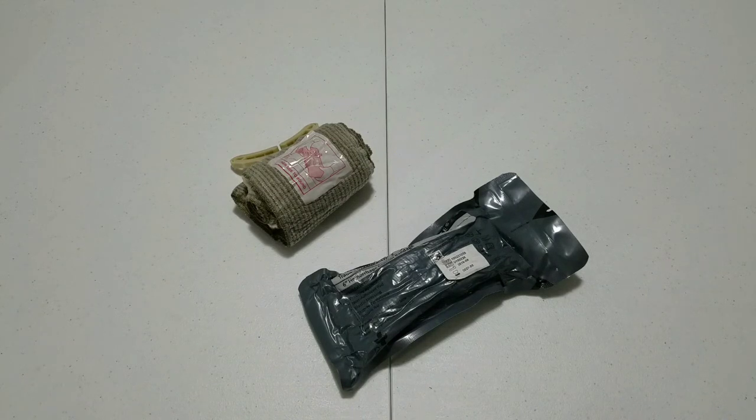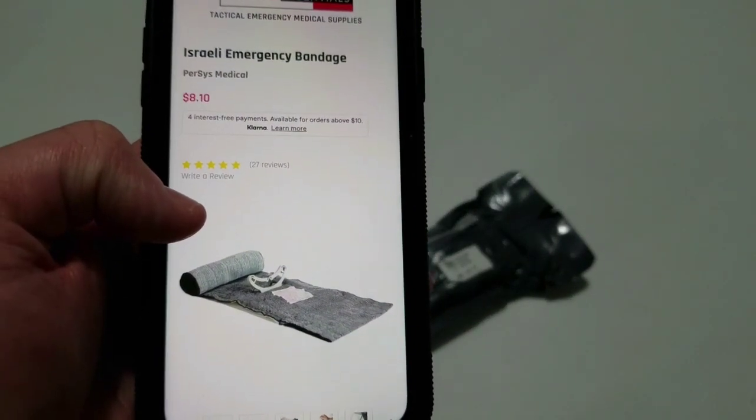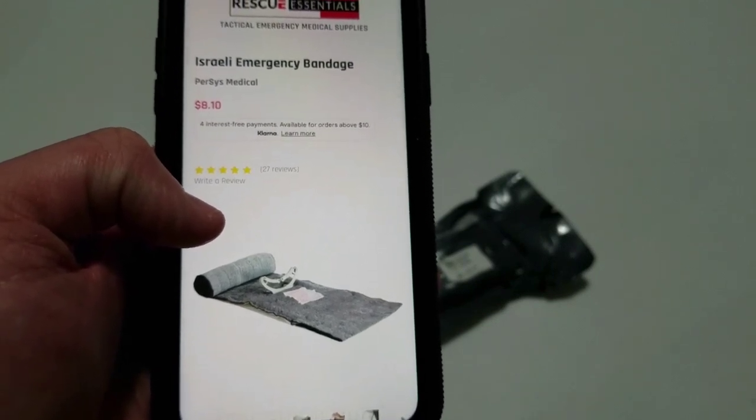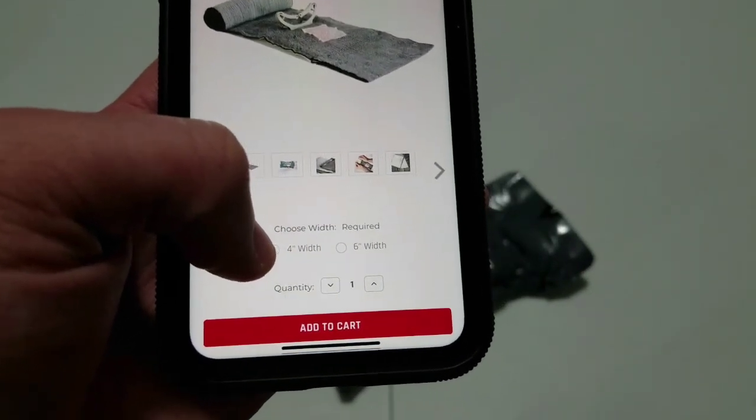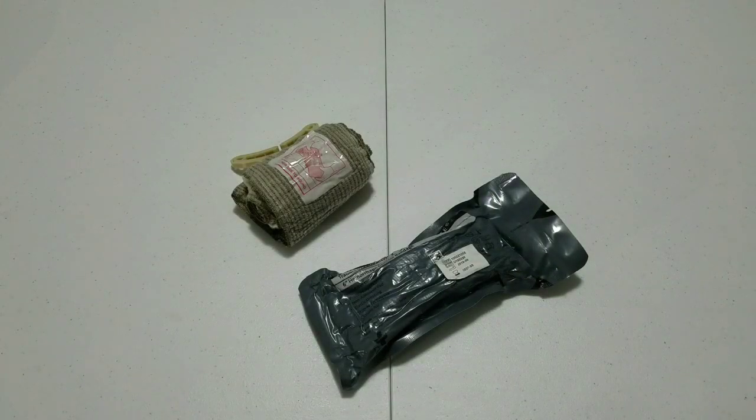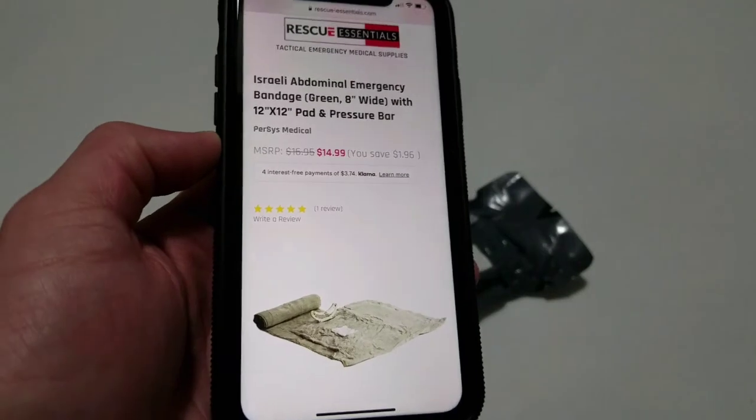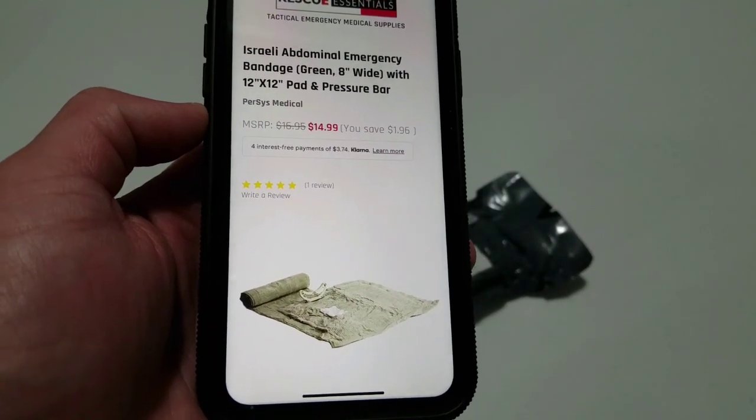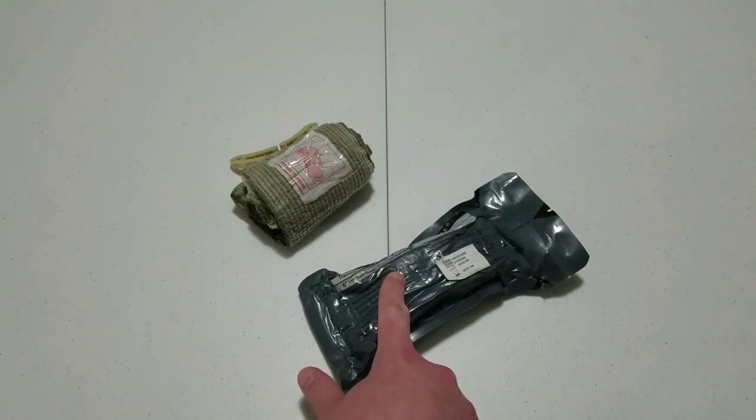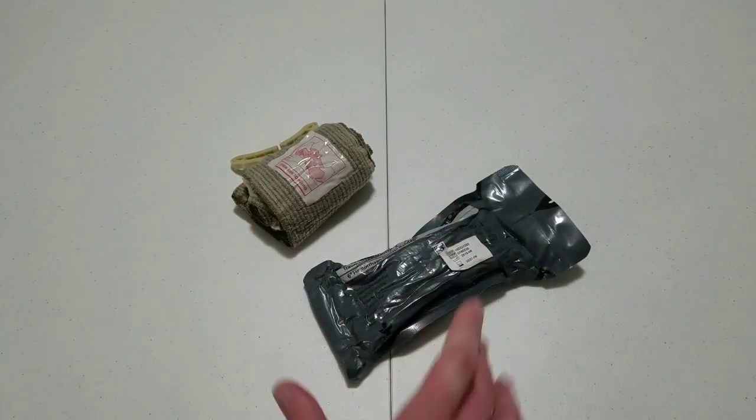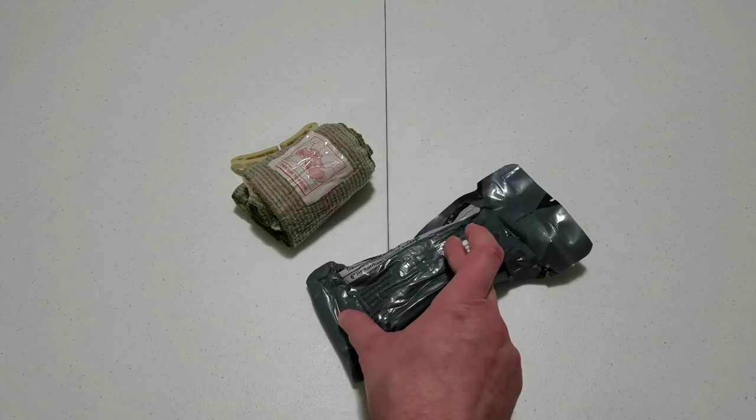Now for the sake of consistency in all of these videos for every various brand of pressure dressing throughout this series I'm going to get the prices from rescueessentials.com. So the Israeli dressing or Israeli bandage or its actual name which is the emergency bandage is available for eight dollars and ten cents. It comes in a four inch wide and a six inch wide. There is also an abdominal specific variant which you typically only see in military use which is an eight inch wide with a 12 by 12 pad. This one is $14.99 and it is very large. It has a very large package. This is a six inch and this is a four inch so you can kind of see the size there. Packaging is the same but the four inch is obviously two inches shorter than the six inch.